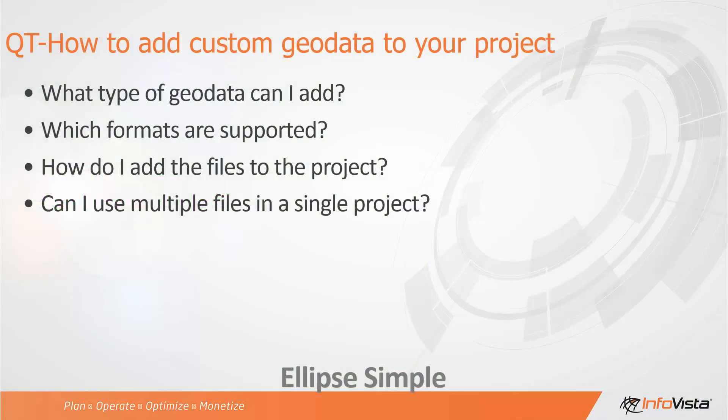Here are the most common questions on this topic: What type of geo data can I add to the project? Which formats are supported by Ellipse? How do I add the files to the project? And finally, can I use multiple files in a single project?